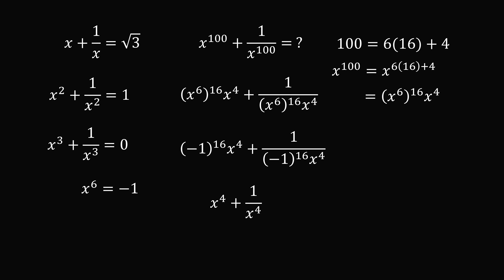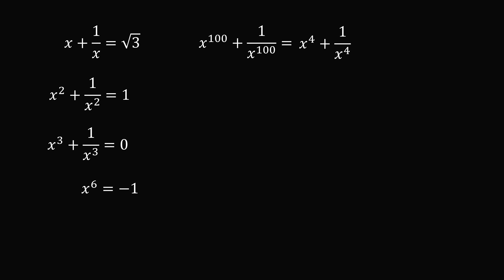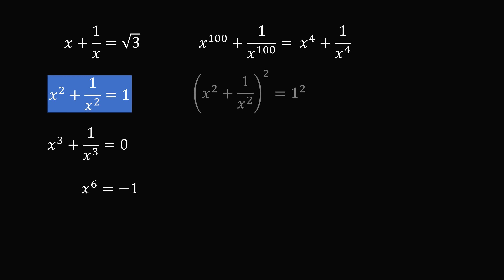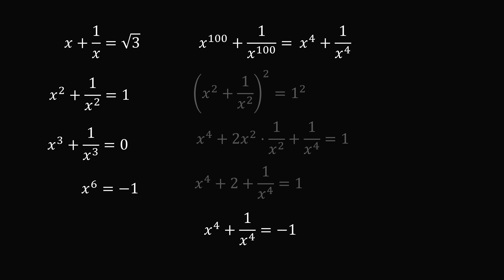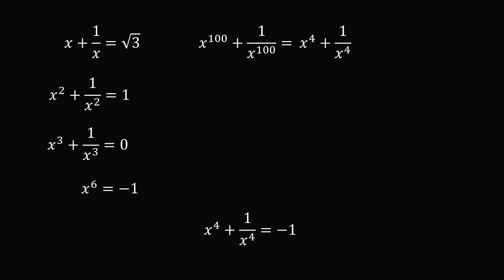To find x to the 4 plus 1 over x to the 4, we square both sides of x squared plus 1 over x squared equals 1. Expanding gives x to the 4 plus 2 times x squared times 1 over x squared plus 1 over x to the 4 equals 1. This simplifies to x to the 4 plus 2 plus 1 over x to the 4 equals 1, so x to the 4 plus 1 over x to the 4 equals negative 1. Therefore, x to the power of 100 plus 1 over x to the power of 100 equals negative 1. That's the answer!